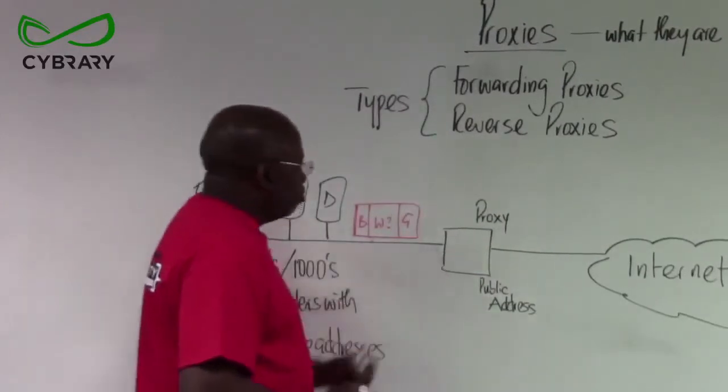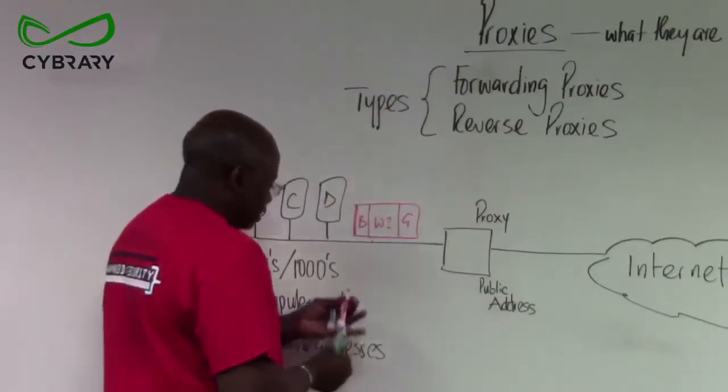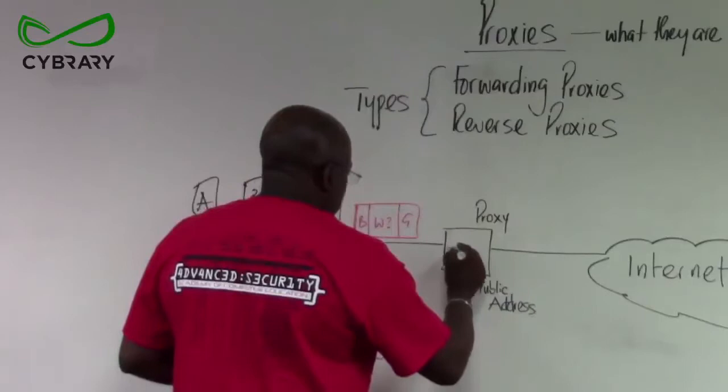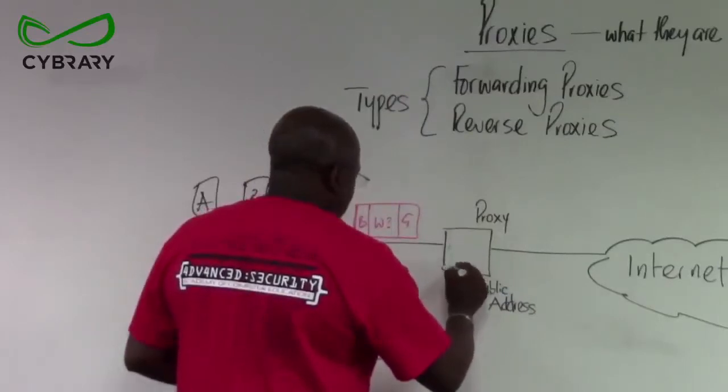The proxy will receive that. What the proxy has is, the proxy has within itself, a proxy table. So, computer A, B, C, and D.